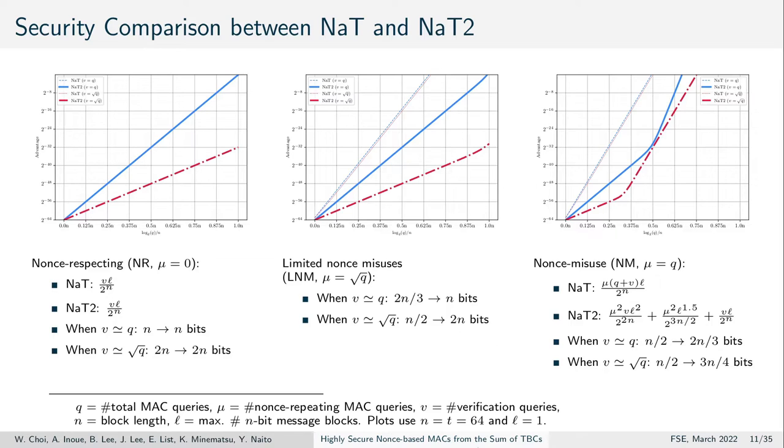In the middle, there are a few nonce-repeating queries in the order of square root of the number of total authentication queries. Then, our construction provides n instead of 2n/3 bit security and even higher security for fewer verification queries.